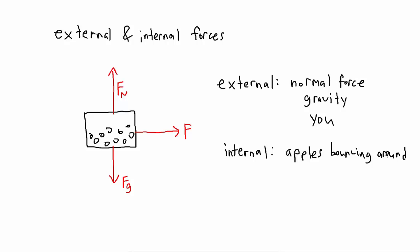However, if we changed our system to just one of the apples, the situation changes. The external forces on an individual apple include gravity, the normal force from the box walls, and all the forces from the other apples bouncing around on it. But notice that the force you are pushing on the box does not affect an individual apple anymore. So depending on the system, the external and internal forces change. This is important because a lot of times we only want to look at the net external force — what you get when you add up all the external forces, remembering that forces are vectors.